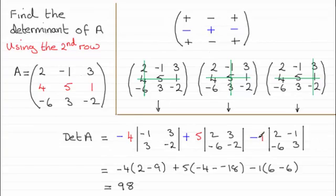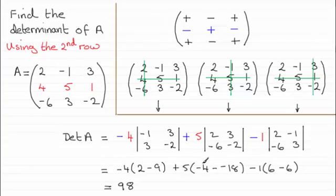Then you've got the numbers in that second row: 4, 5, 1. The determinant associated with the 4 has minus one, three, three, minus two. Similarly we've got two, three, minus six, minus two, and then two, minus one, minus six, three in the final determinant. Working that all out in the usual way comes to 98.